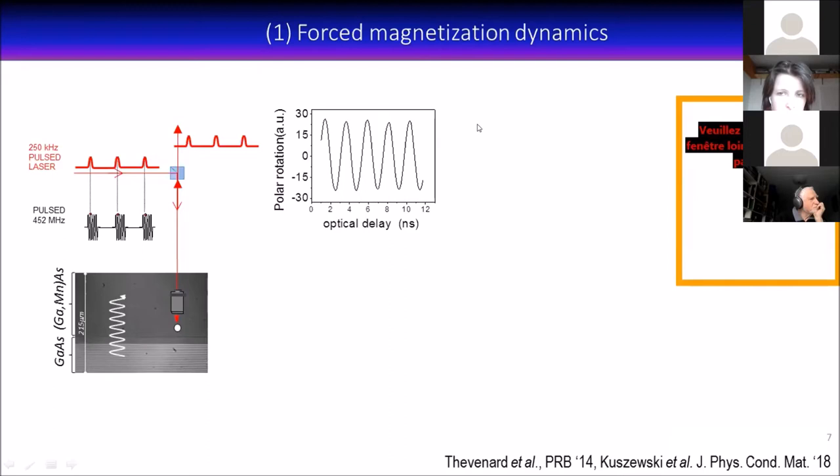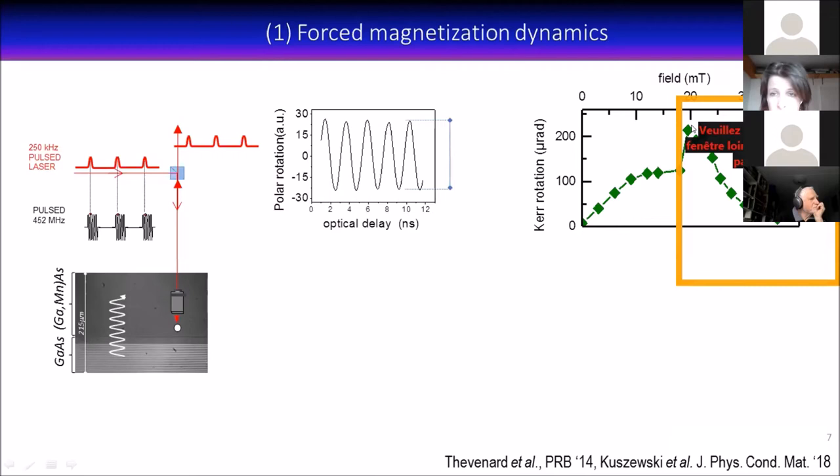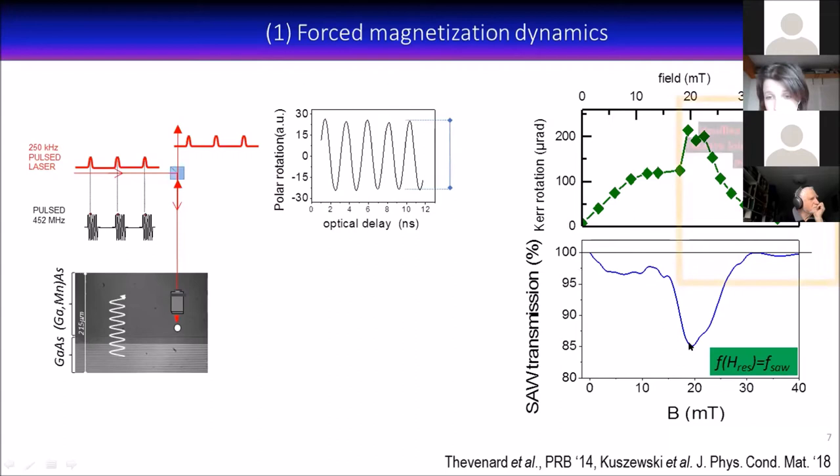We can then monitor how the amplitude of the signal varies with field, and we get a nice resonant behavior. This is Kerr rotation versus field, and you see it peaks here at 20 millitesla, exactly the same field at which the SAW transmission was the lowest. This is a clean demonstration that all the energy lost by the acoustic wave is transferred to the magnetic system and fuels its precession.